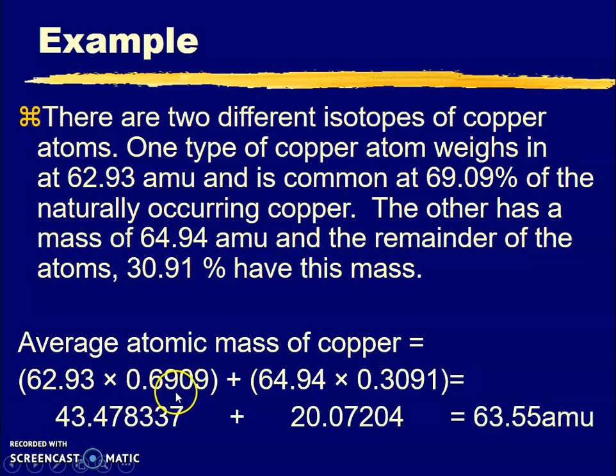When we do the math for those two, this is what we get: 62.93 times 0.6909 equals 43.478337. Plus, then we have this number. After you've done each multiplication set, no matter how many you have, you add all those answers together.